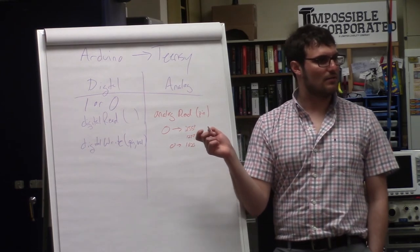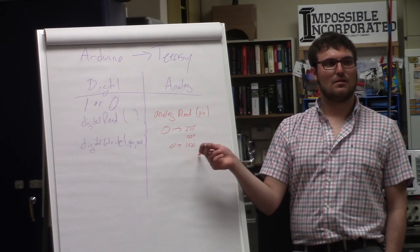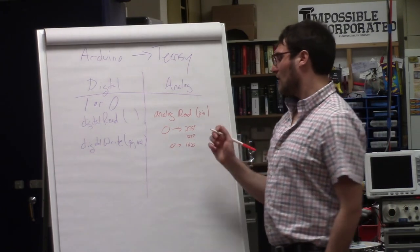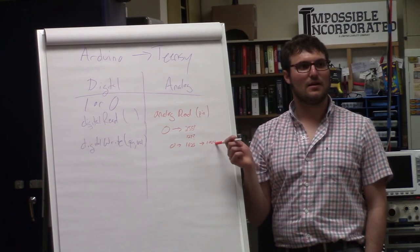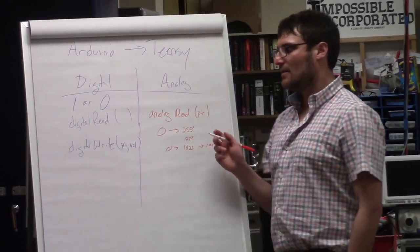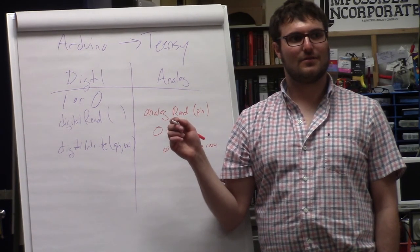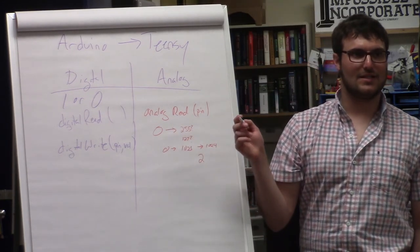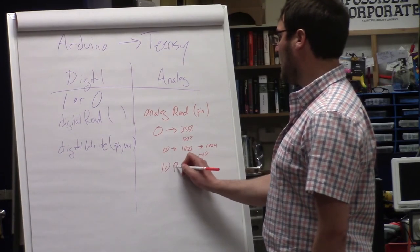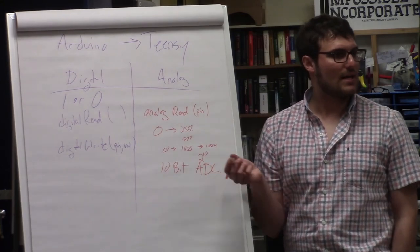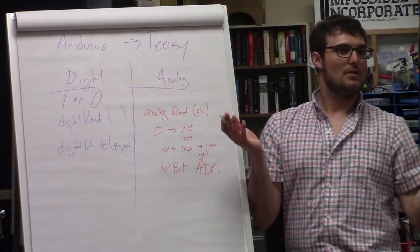Those seem like arbitrary numbers. Where's this 1023 come from? How many numbers are between 0 and 1023? 1024. That's 1,024 discrete values between those numbers. Does that number seem more familiar? 2 to the 10. So we call this a 10-bit analog to digital converter, ADC. So that's where that number comes from. Your Arduino has a 10-bit ADC. It just so happens that the Teensy has a 16-bit one, which means that number gets much smaller.